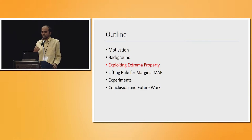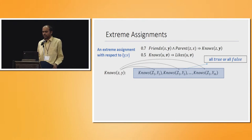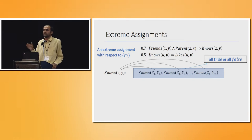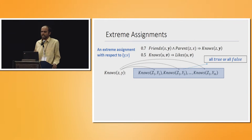Now for the first contribution: exploiting the extrema property. Extreme assignments are defined with respect to some equivalence class variables. For example, considering equivalence class {Y, V}: an assignment is extreme with respect to this class if, considering all possible groundings where only the equivalence class variable varies but other variables are fixed to the same constant — for instance, knows(Z1, Y) where Z is fixed to Z1 but Y varies — all these groundings get the same truth value, true or false. This is the key property we'll use to exploit lifting or symmetries.